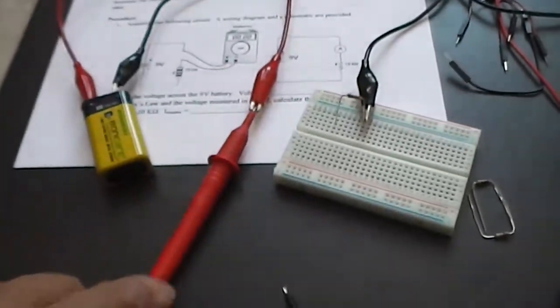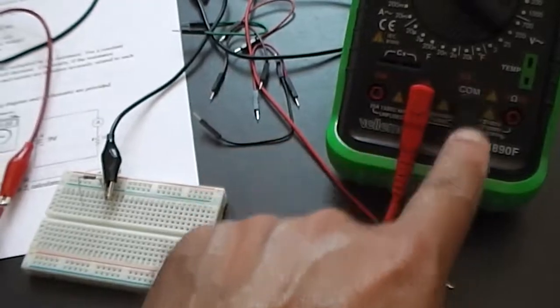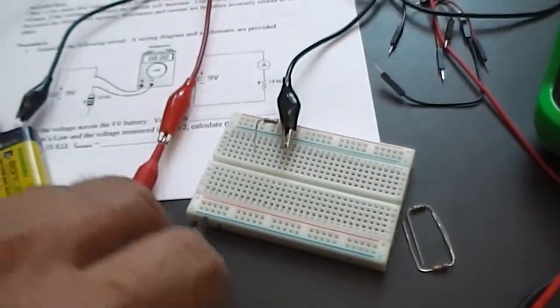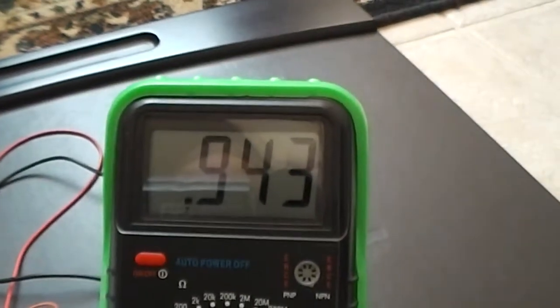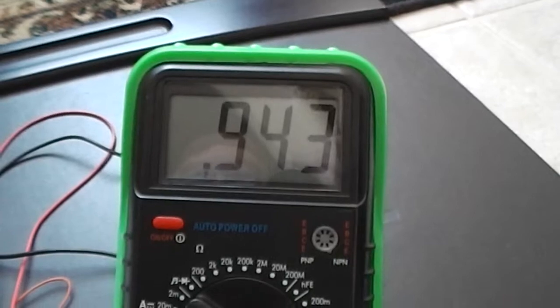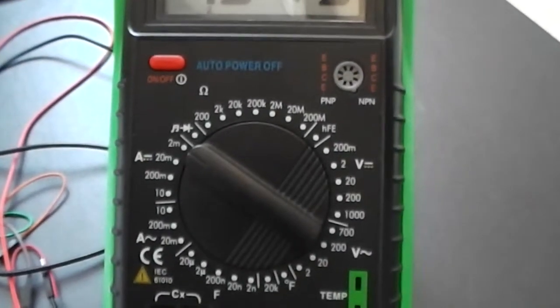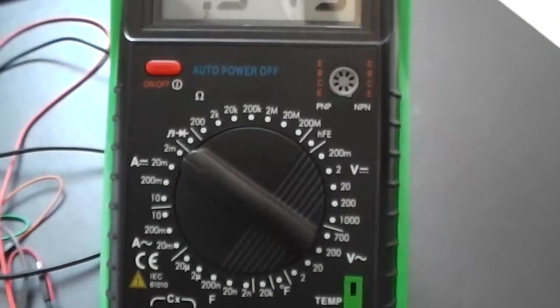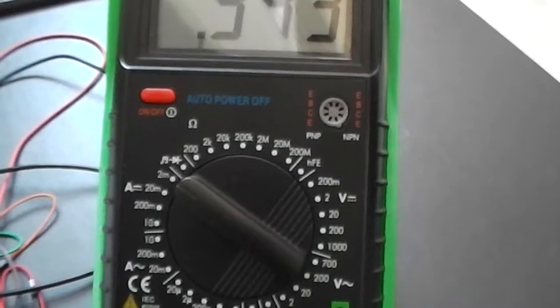And don't forget that the current flows through the meter, okay, and comes out the black lead. And the black lead is going to be where the other point is. And you can see on the screen that I get, excuse me, 0.943 milliamps. Now the thing is, when you look at the setting, it's in the 2 milliamp range setting. So that means that whatever you see on the screen is going to be in milliamps.